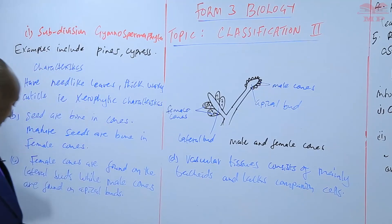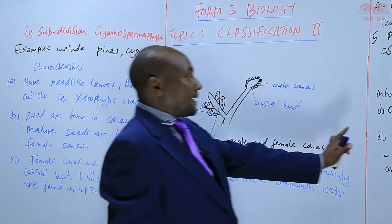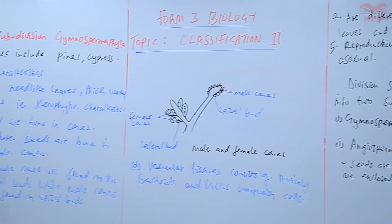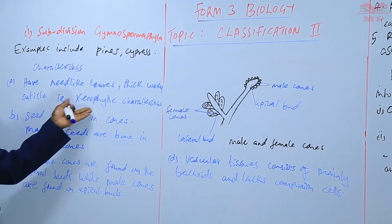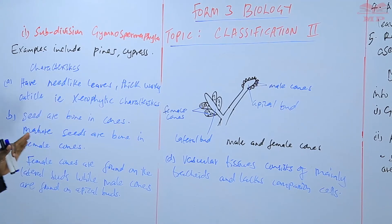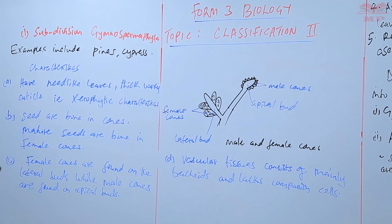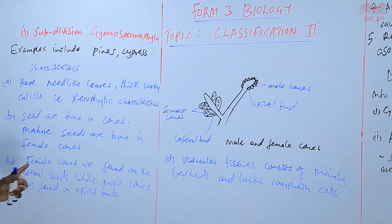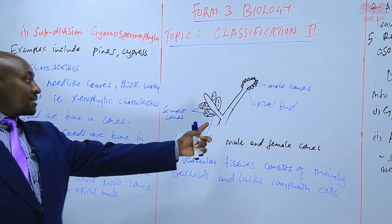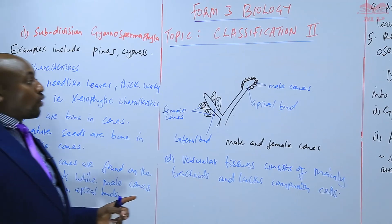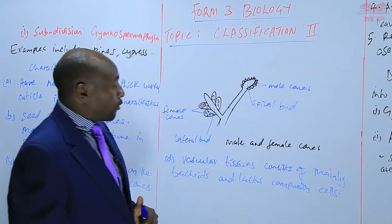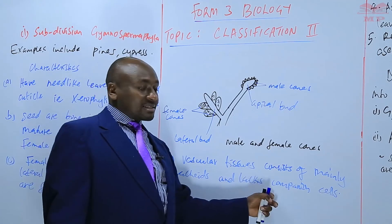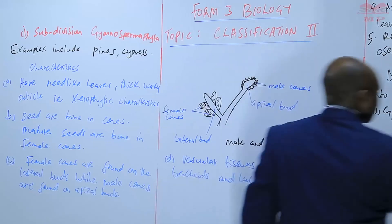So basically, subdivision Gymnospermophyta bears naked seeds — seeds not enclosed within the fruit. They have needle-like leaves with a thick waxy cuticle and show xerophytic characteristics. Seeds are born in cones; mature seeds form on female cones found on lateral buds, while male cones are on apical buds. The vascular tissue consists mainly of tracheids and lacks companion cells.